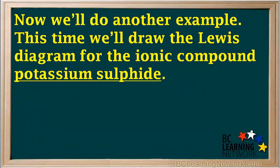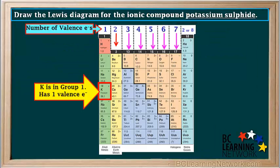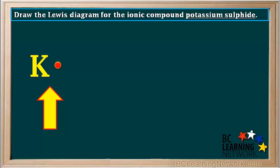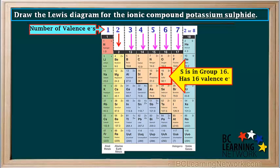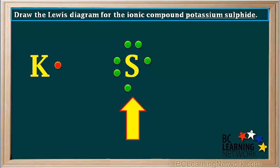Now we'll do another example. This time we'll draw the Lewis diagram for the ionic compound potassium sulfide. We'll look up potassium and we see that it's in group 1, so it has one valence electron. We'll show a potassium atom and its one valence electron here. Looking up sulfur, we see that it is in group 16, so it has six valence electrons. So we write the Lewis diagram for a sulfur atom here. The six valence electrons are arranged so it has two lone pairs and two unpaired electrons. The unpaired electrons are at right angles to each other.